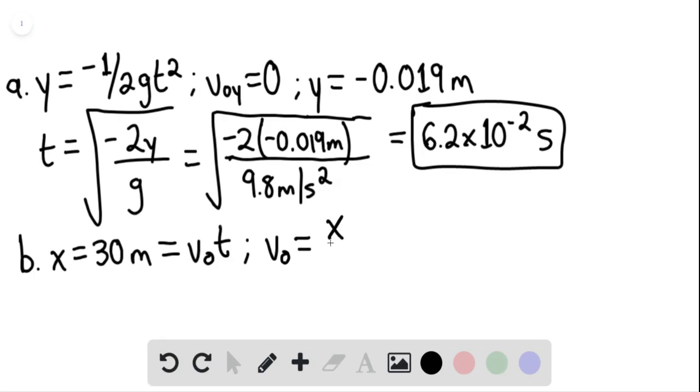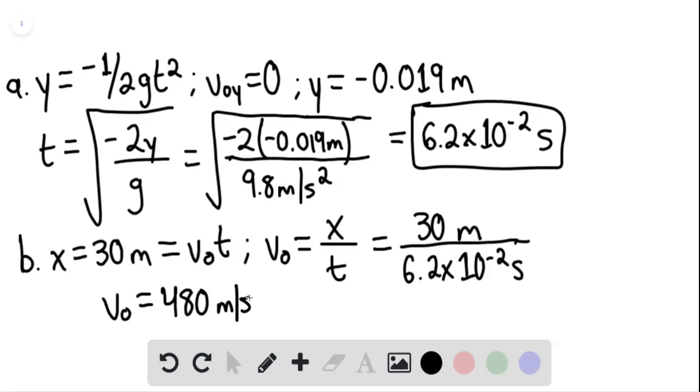this would be equaling x over t. So we have 30 meters divided by 6.2 times 10 to the negative second seconds, and we find that the initial velocity is equaling approximately 480 meters per second.